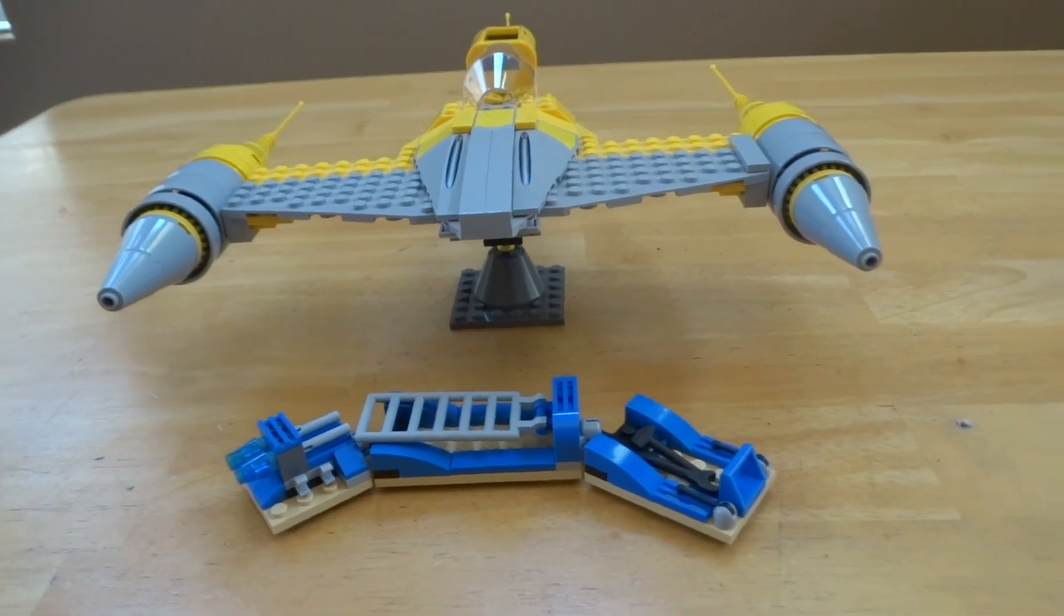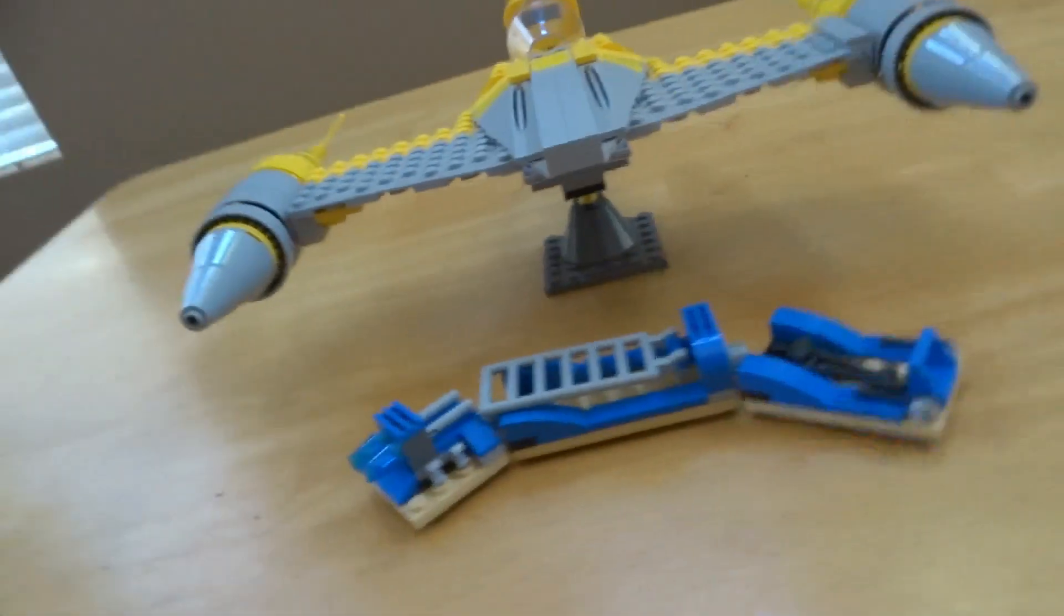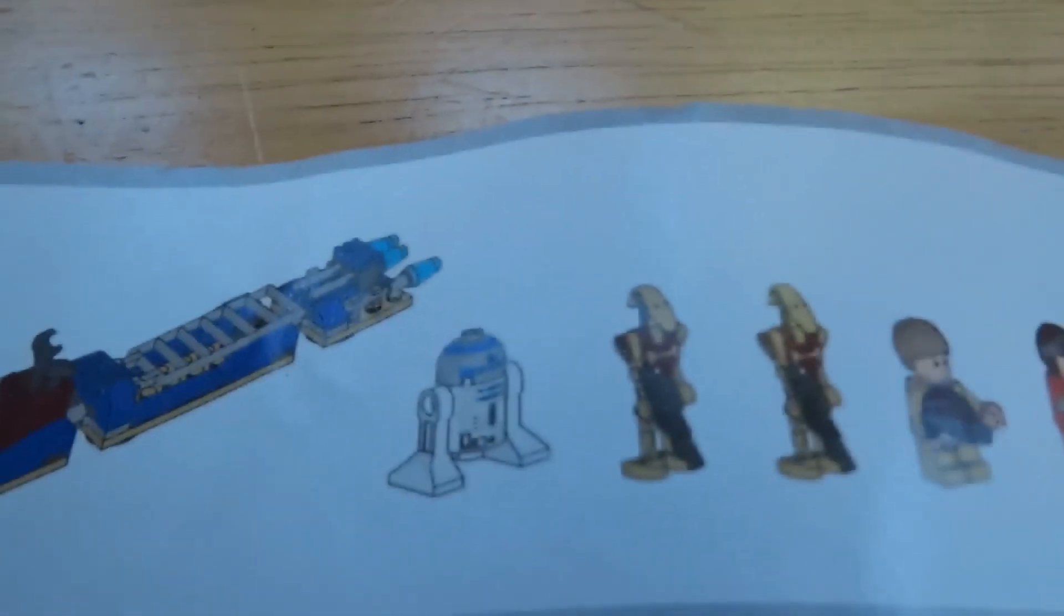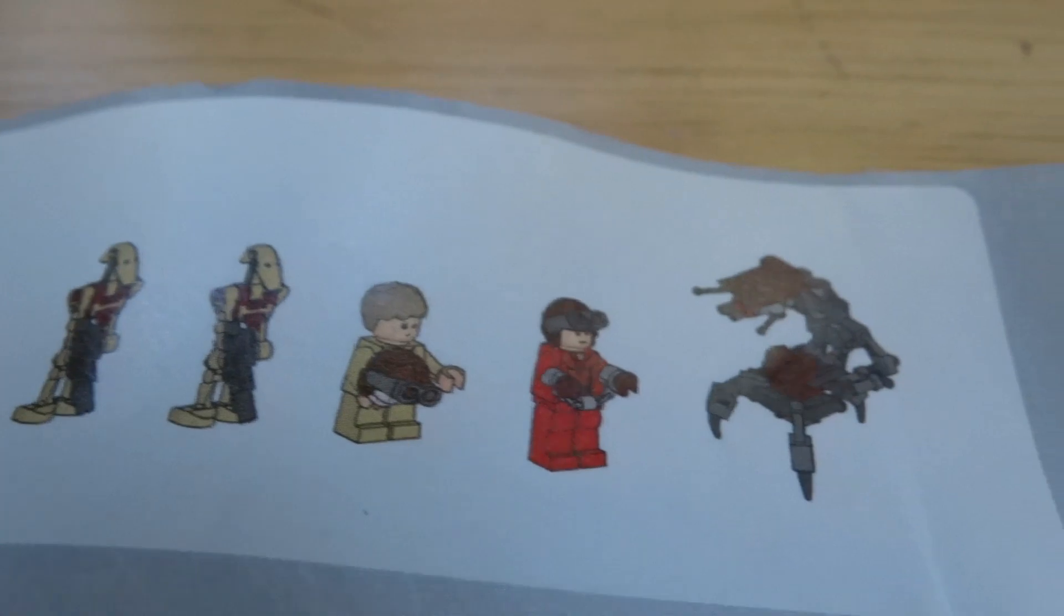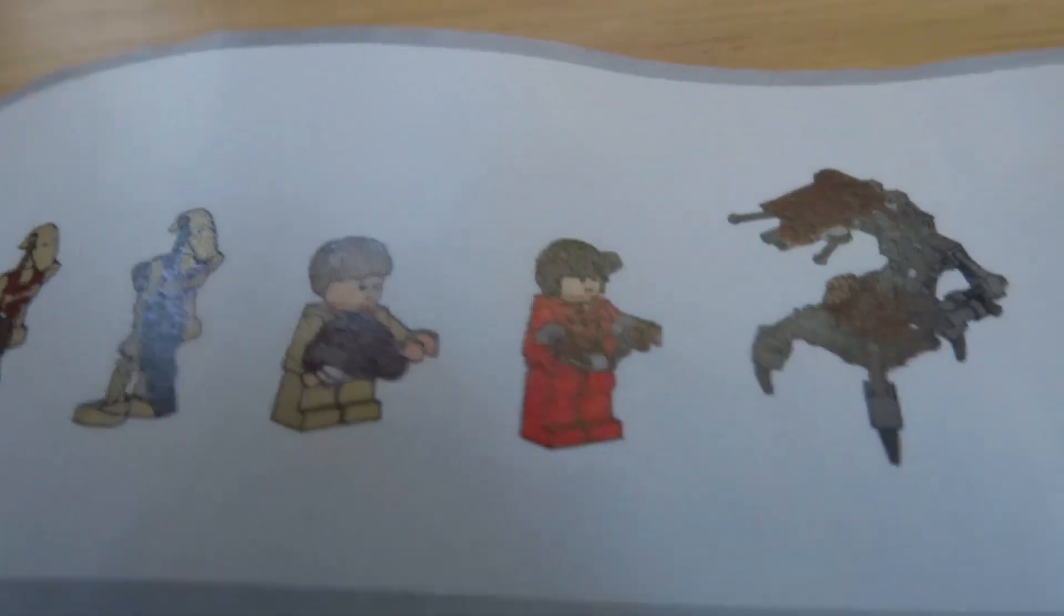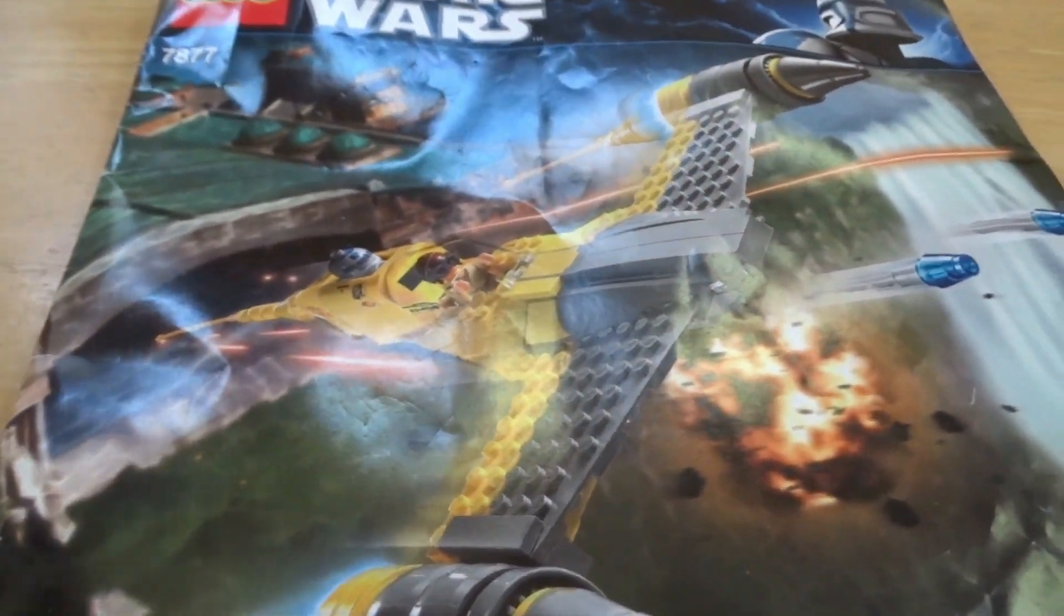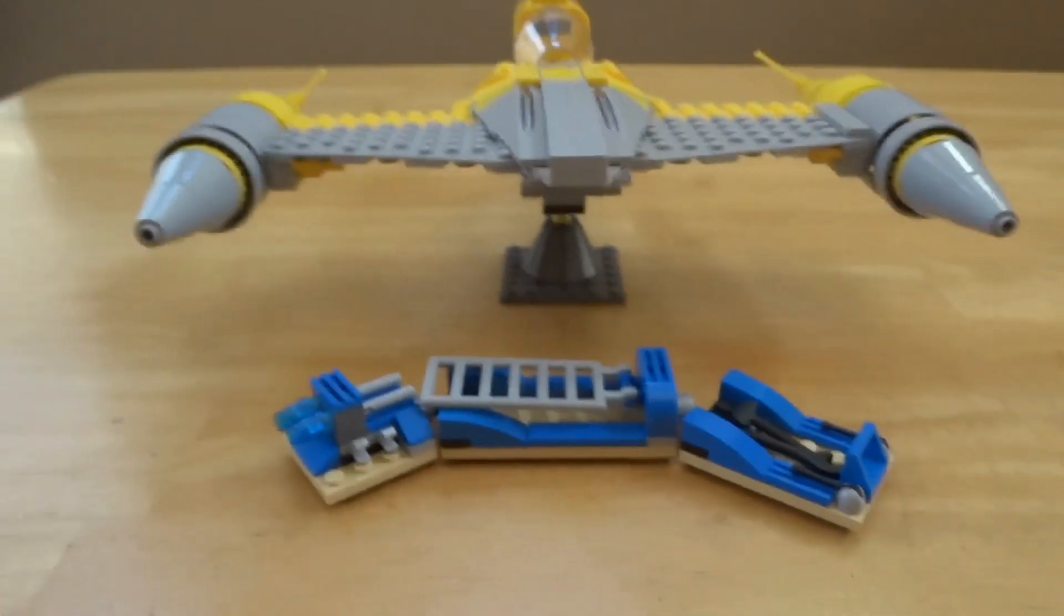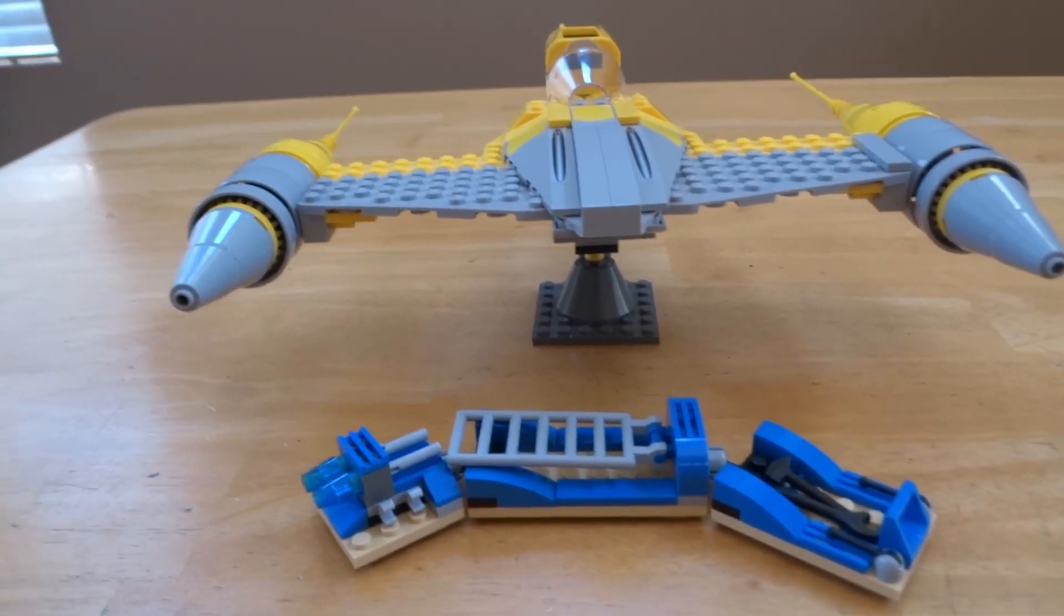I don't have the minifigures or the other part of the build. I don't have the R2D2, both of the security droids, the Anakin Skywalker, the Naboo pilot, and the droideka. So this will just be a review of the transport and the actual Naboo starfighter. Let's get into it.